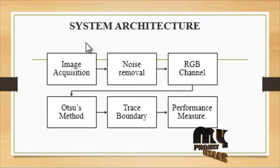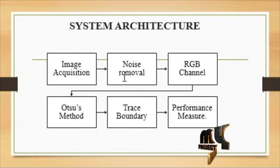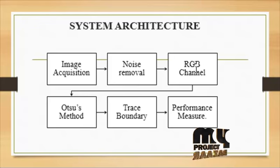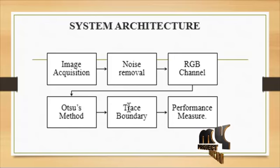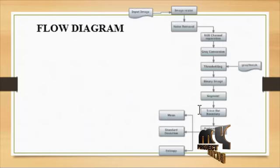Let us see the system architecture. The first step is image acquisition — here I get the input image, then remove noise from the input image. Then RGB channel separation: R channel, G channel, and B channel are individually separated. Then the R-plus method is applied, converting the images to a grayscale image, then threshold values are applied, then BW — the primary image is converted into a binary image, then the boundary values are traced.